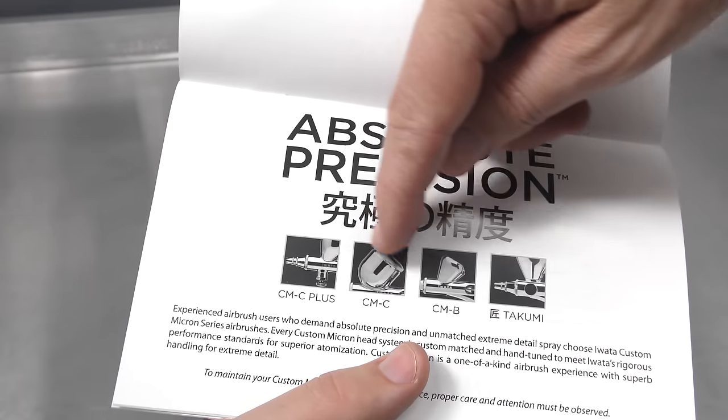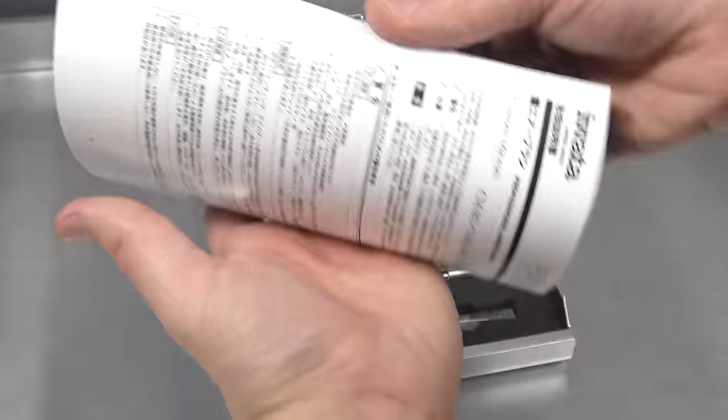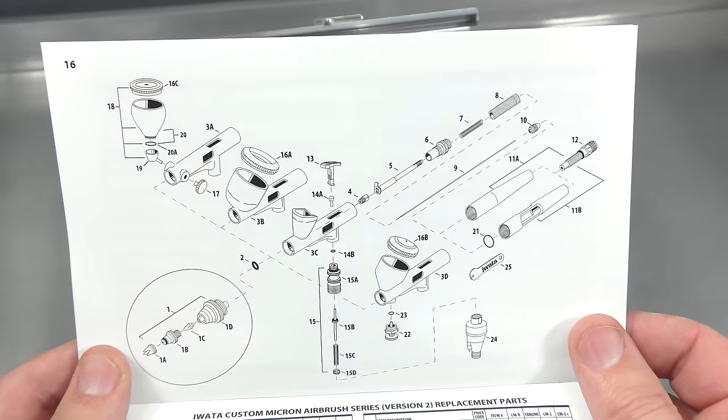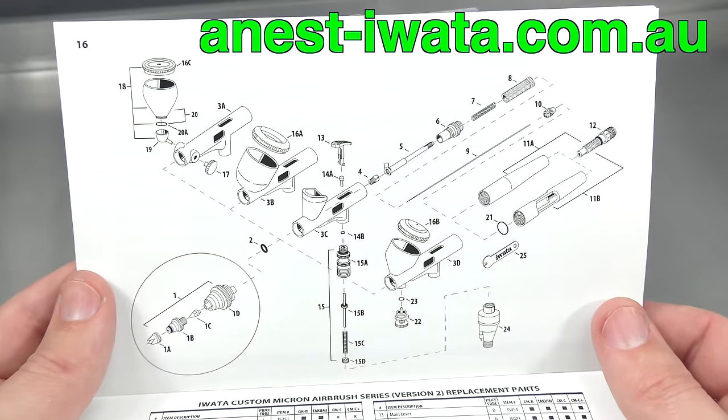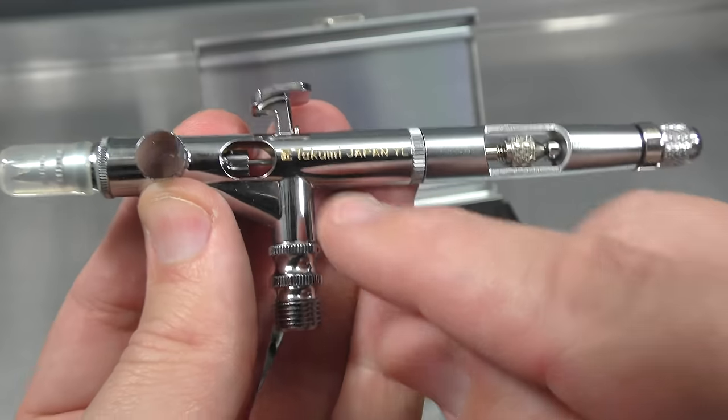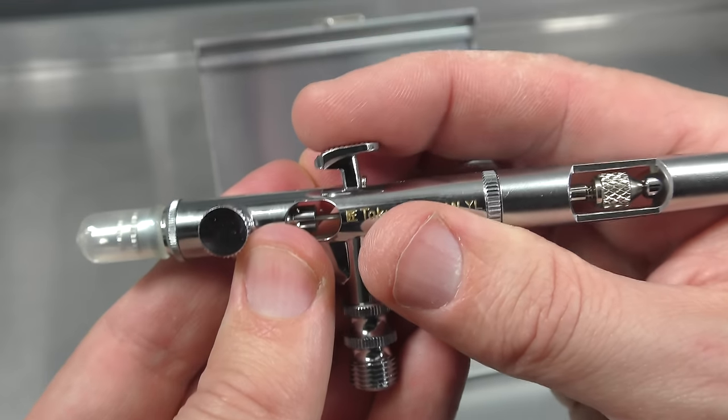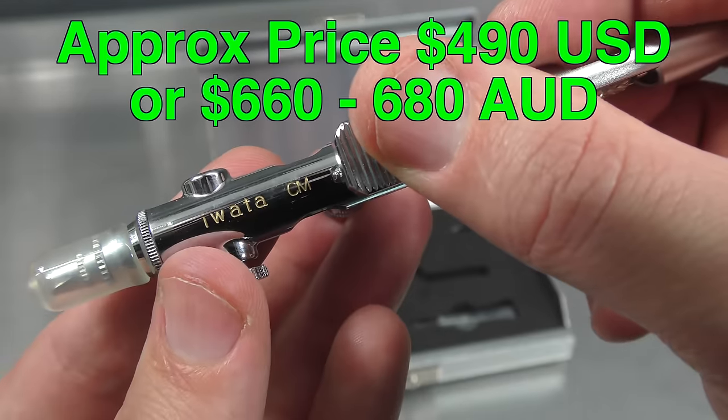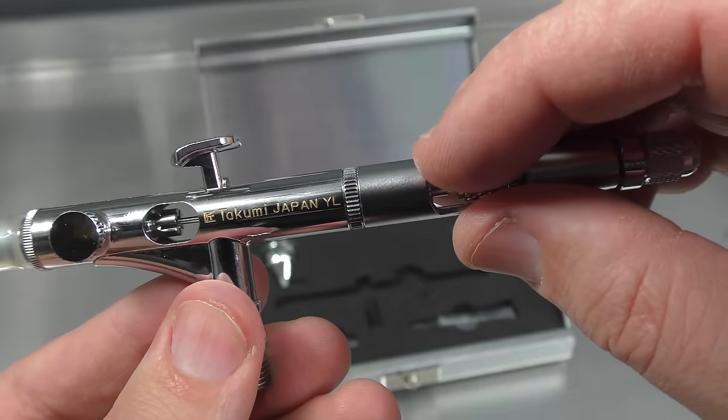The manual shows the different Micron airbrushes, features, and probably the most useful thing is your exploded diagram. A lot of these you can find as PDFs on the Iwata sites. The Anest Iwata Australia site definitely has downloadable PDFs if you need these. The airbrush has Takumi written on there, Japan. Feels nice and smooth as you'd expect from a brush at this price point, with Iwata written on the top and Anest Iwata on the other side. It's inscribed with gold, a little bit different.